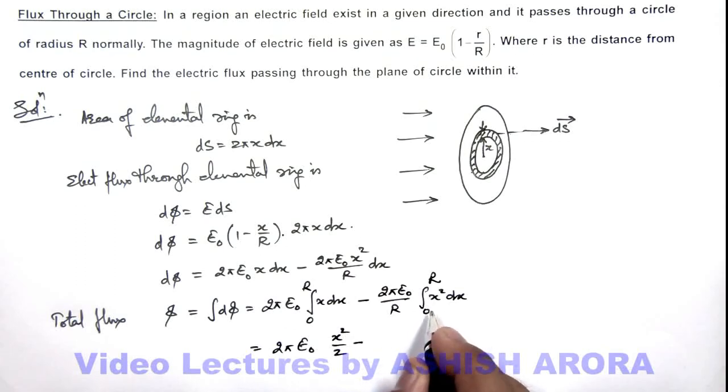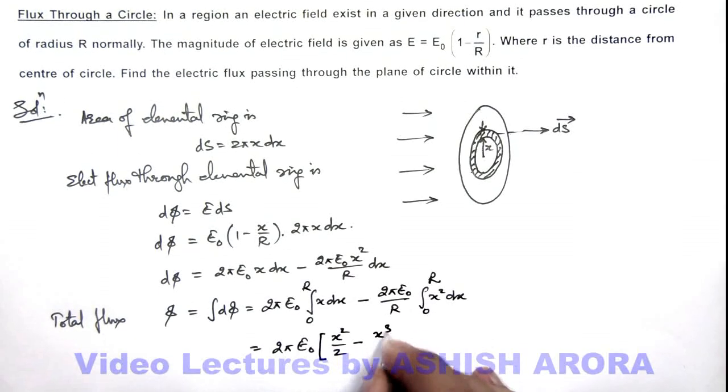In this situation, 2πE₀ I can take common, this can be written as x²/2 - x³/3R, and I substitute the limits from zero to R.